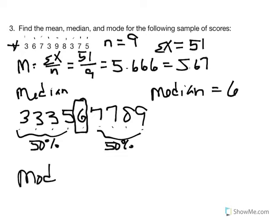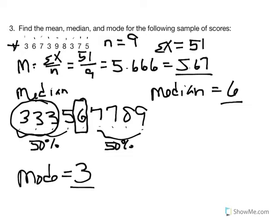Finally, the mode is the value with the highest frequency or most popular score. Looking at our ranked distribution, the value of 3 is the most frequently occurring score. Given the difference among the mean of 5.67, the median of 6, and the mode of 3, we would conclude that the distribution is not symmetrical, because they are not equal to one another.